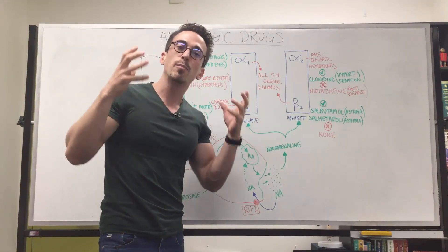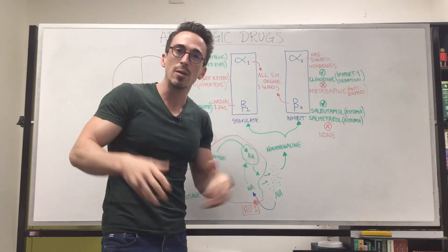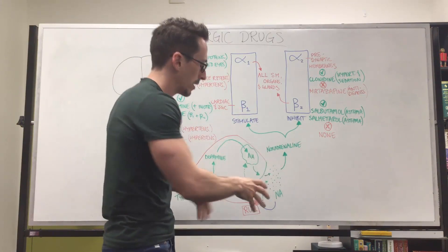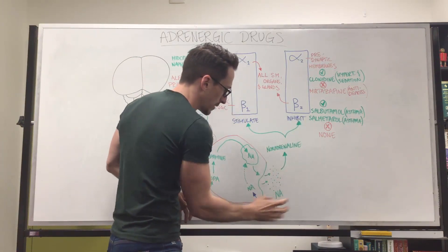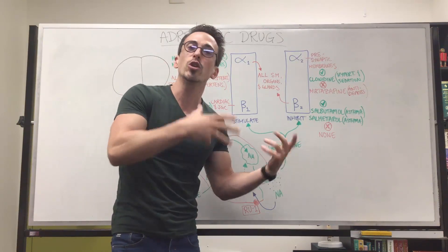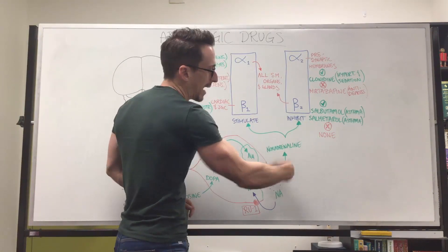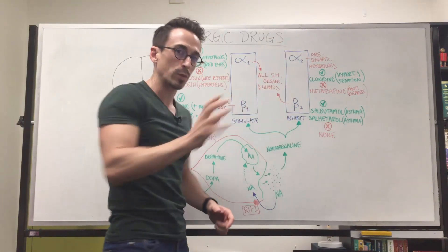Some antidepressants as well, some norepinephrine reuptake-inhibitor drugs can actually inhibit this particular process. Such as the SNRI, serotonin noradrenaline reuptake inhibitors also inhibit this process, leaves more noradrenaline out in the synapse and stimulates these receptors.